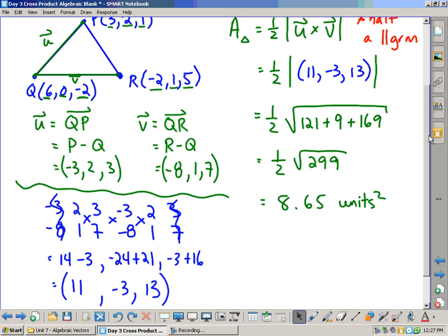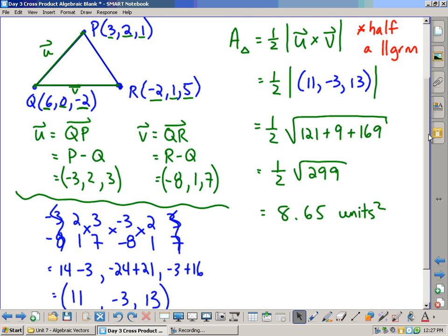So recap, write down the points. I like to draw the points so that I make sure I have proper vectors. Then, create those vectors U and V by doing QP being P minus Q, and QR being R minus Q. Get those two points. The cross product is what you do down at the bottom. You get that cross product of 11, negative 3, and 13. We need the magnitude of that is the area of the parallelogram, so we take the square root of the squares, and then half of that gets us the area of the triangle.